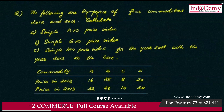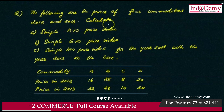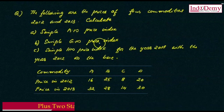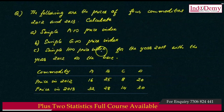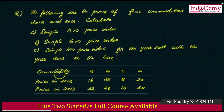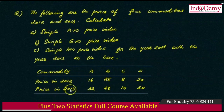The following are the prices of four commodities in 2012 and 2013. Calculate the arithmetic mean price index, geometric mean price index, and harmonic mean price index for the year 2013 with 2012 as the base. Commodities A, B, C, D: price in 2012 is 16, 25, 8, and 20; price in 2013 is 32, 28, 14, and 30.